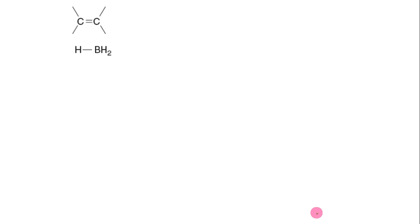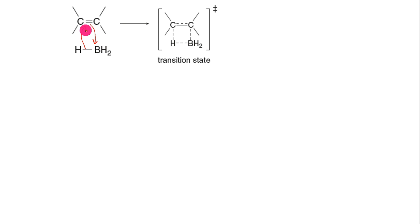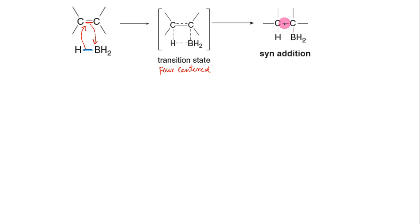The proposed mechanism involves a concerted addition of H and BH₂ from the same side of the planar double bond. The pi bond and B-H bond are broken as two new sigma bonds are formed. Because four atoms are involved, the transition state is said to be four-centered. The pi electrons form the sigma bond with boron, while the electrons of the B-H bond are used to form the C-H bond. Thus an alkylborane is formed via syn addition.